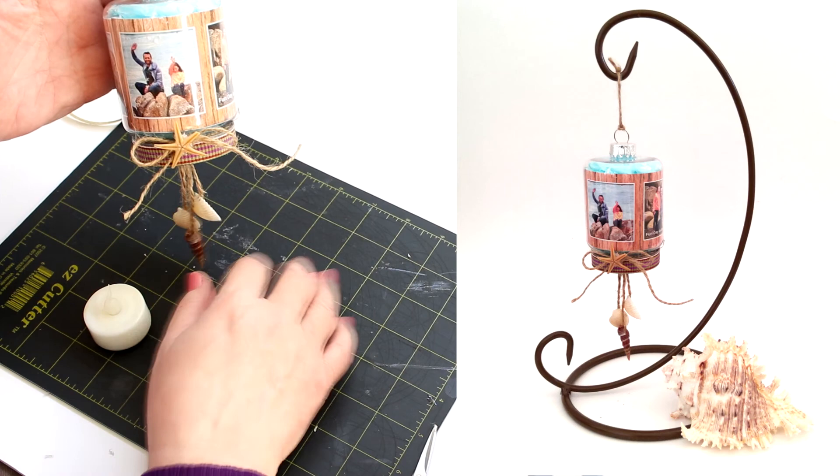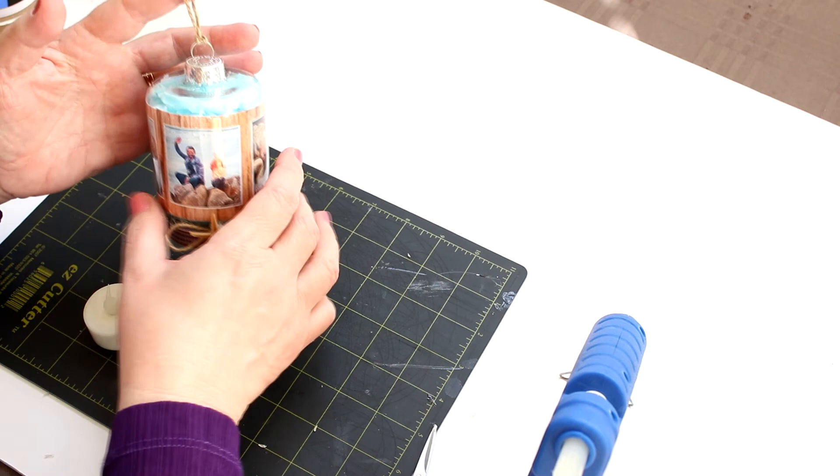And you could put a variety of seashells underneath there, maybe some sand on a plate, something like that. And that would make a lovely home decor item. So again, I stuffed it with the tissue paper, but I put some of the fake snow in there.